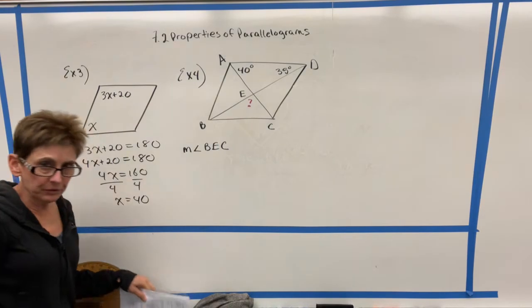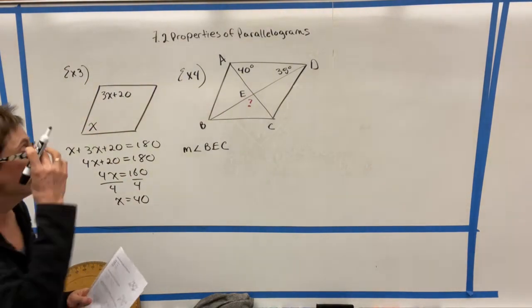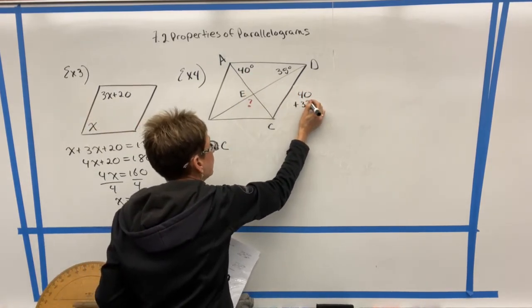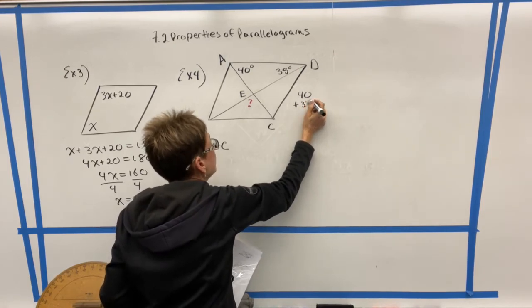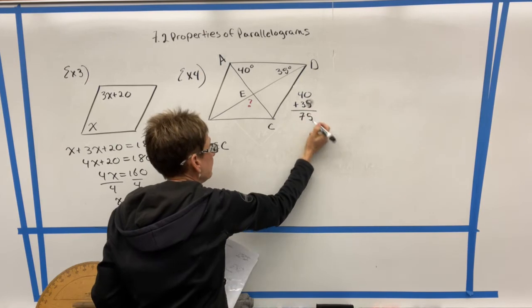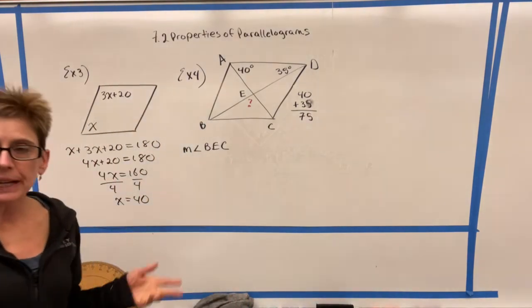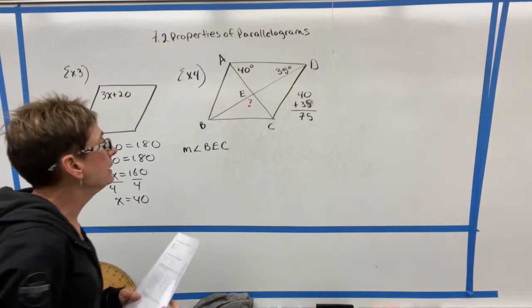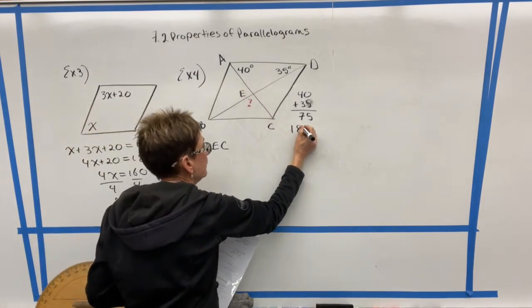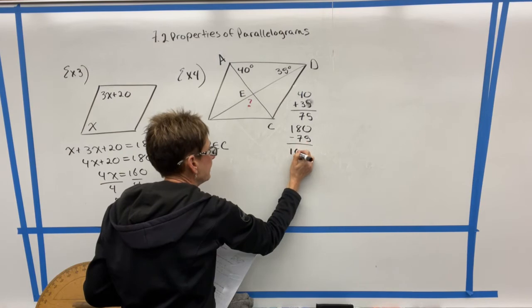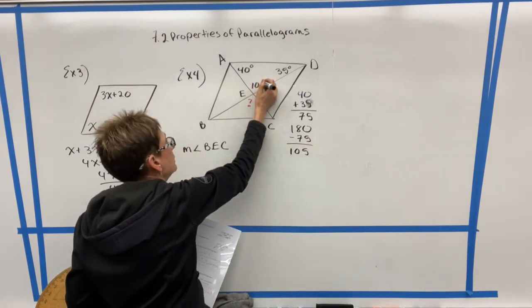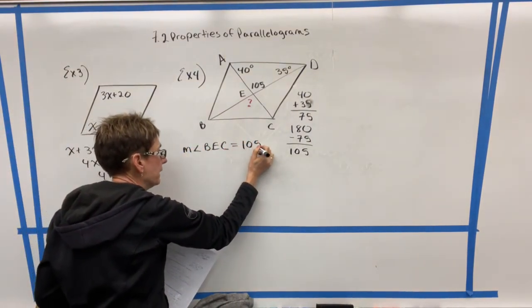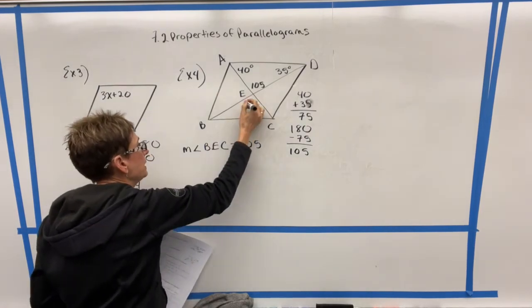We can kind of trace this out a little bit if we go from B to E to C, and we can see that this is the angle that they're asking about here. Now, in order to do this, I do need to remember that vertical angles are congruent. So I can notice that in this triangle up here, two of the angles are 40 and 35. If I add them together, I get 75. I know that all three angles in a triangle add up to how much? All three angles in a triangle add up to 180. So if these two are 75, and I take 180 minus 75, I'm going to get 105.